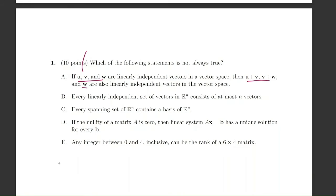Remember that if something is linearly independent, that means it satisfies this relation: if you have some scalar multiplied by one vector plus another scalar multiplied by the other one, et cetera, that equals the zero vector. This is only satisfied when c1, c2, and c3 all equal zero.